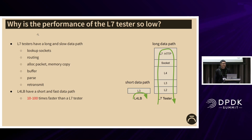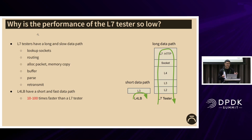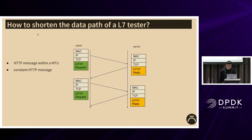That's because L7 testers have a long and slow data path. L7 testers need to do a lot of tasks such as socket lookup, routing, packet allocation, memory copying, buffering, protocol parsing, and retransmission. But L4LB has a very short and fast data path. For each received packet, L4LB only needs to modify the header and forward the packet out. So L4LB is 10 to 100 times faster than our L7 tester. How to shorten the data path of our L7 tester — that's the key to high performance.